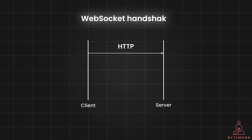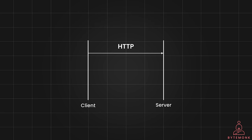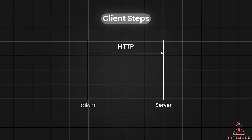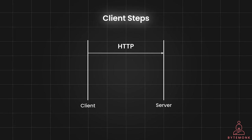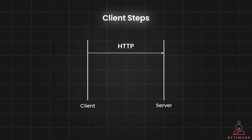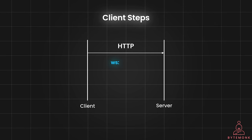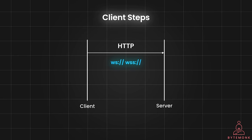The WebSocket handshake process is a crucial step that establishes a real-time communication channel between a client, which is the browser, and a server. It leverages the familiar HTTP protocol for the initial connection, but then negotiates an upgrade to the WebSocket protocol. The client opens a regular HTTP connection to the server, specifying a desired WebSocket endpoint in the URL, usually prefixed with WS or WSS for secure connections.